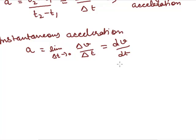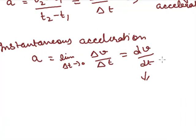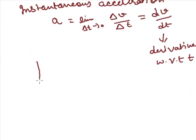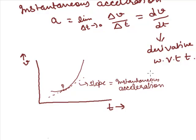Where dv upon dt is the derivative of velocity v with respect to time t. The instantaneous acceleration at any instant is equal to the slope of the velocity-time graph at that instant. In this figure, instantaneous acceleration at point P is equal to the slope of the tangent to the graph at point P.